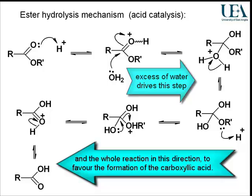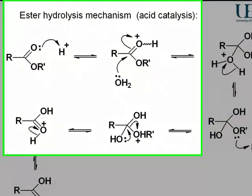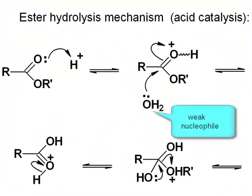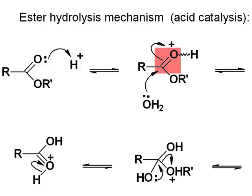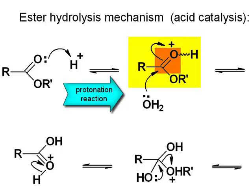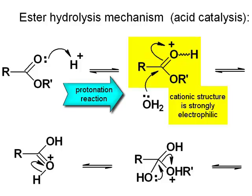As you can see from the top of that slide, as in the example last time, the water is acting as a nucleophile. It's a neutral nucleophile, so it's a relatively weak nucleophile. The first step is the acid-catalyzed activation of the electrophile — there's our electrophilic carbon-oxygen polar multiple bond. You can see the protonation reaction producing a cationic structure which is more reactive, more electrophilic than the neutral one — reactive enough now to react with the weak nucleophile.